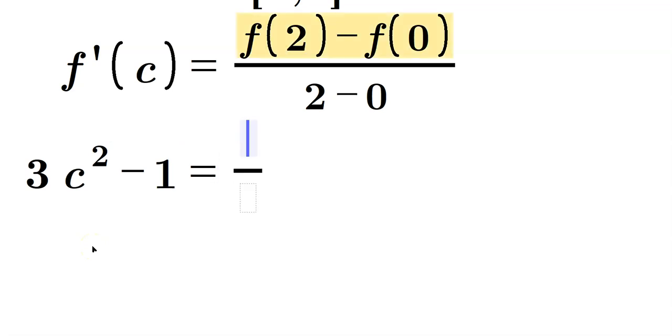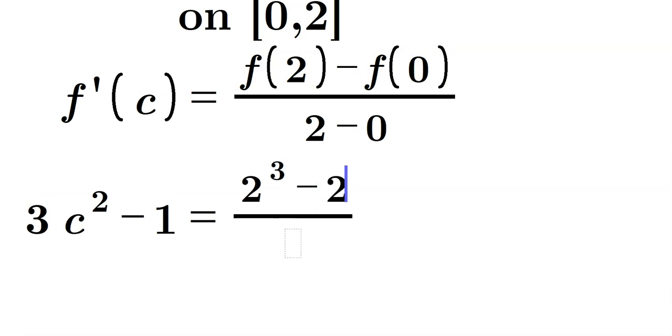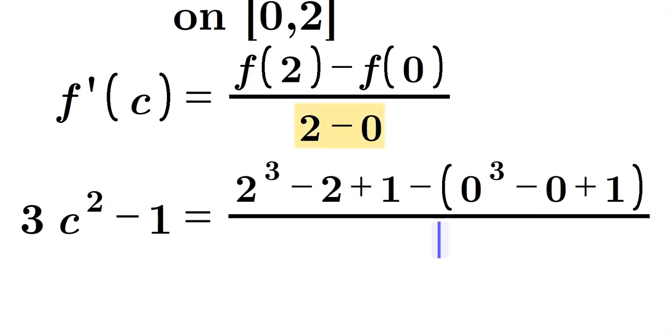And on the right side, you have to compute f of 2. So given our function, it would look like 2 cubed minus 2 and then plus 1 minus, within parentheses, be very careful there because it's multiple terms, that would be 0 cubed minus 0 and then plus 1. And this whole thing would be hanging here over